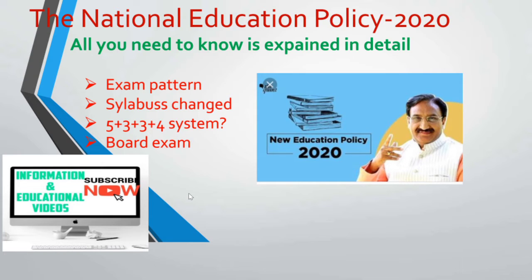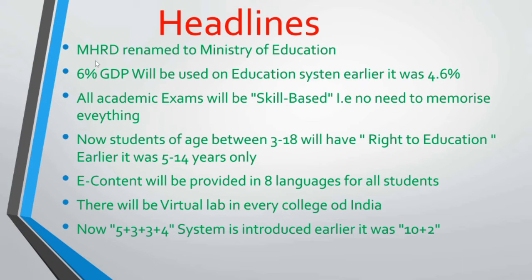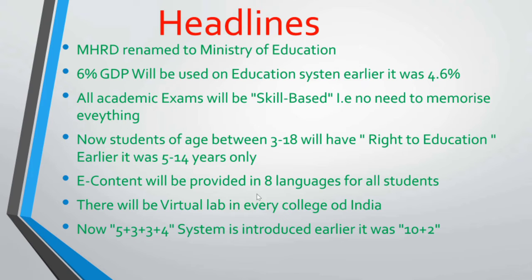Let's start with the headlines. The MHRD has been renamed to the Ministry of Education. 6% of India's GDP will be used on the education system — earlier it was only 4.6%. All academic exams will now be skill-based, meaning there is no need to memorize everything. Students aged 3 to 18 will have the right to education — earlier it was only for students aged 5 to 14 years.